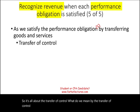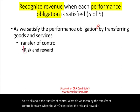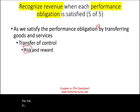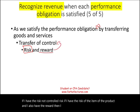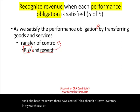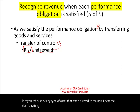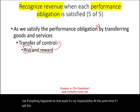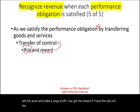What do we mean by the transfer of control? It means who has the risk and reward. If I have the risk of the item — of the product — and I also have the reward, then I have control. If I have inventory in my warehouse or any type of asset delivered to me, I bear the risk. If anything happened to that asset, it's my responsibility. At the same time, if I sell this asset and make a large profit, I get the reward. If I have the risk and the reward, it's my product — I purchased it. So the other party made a sale.